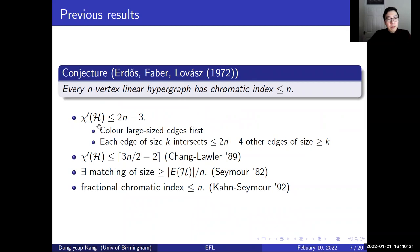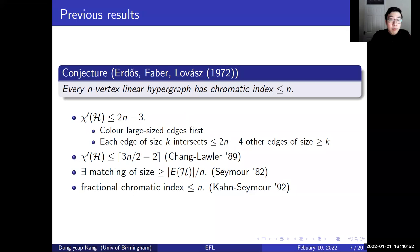Because of the long history of the conjecture, there are many previous results, and I will mention some of them. First, we have a quite straightforward bound where the chromatic index is at most 2n-3. To show this, we arrange the edges in decreasing order, aiming to color large-sized edges first. One can see every edge of size k intersects at most 2n-4 other edges of size at least k, which means by a greedy coloring argument we need 2n-4+1 colors. In 1989, Chang and Lawler improved this bound to 3n/2.